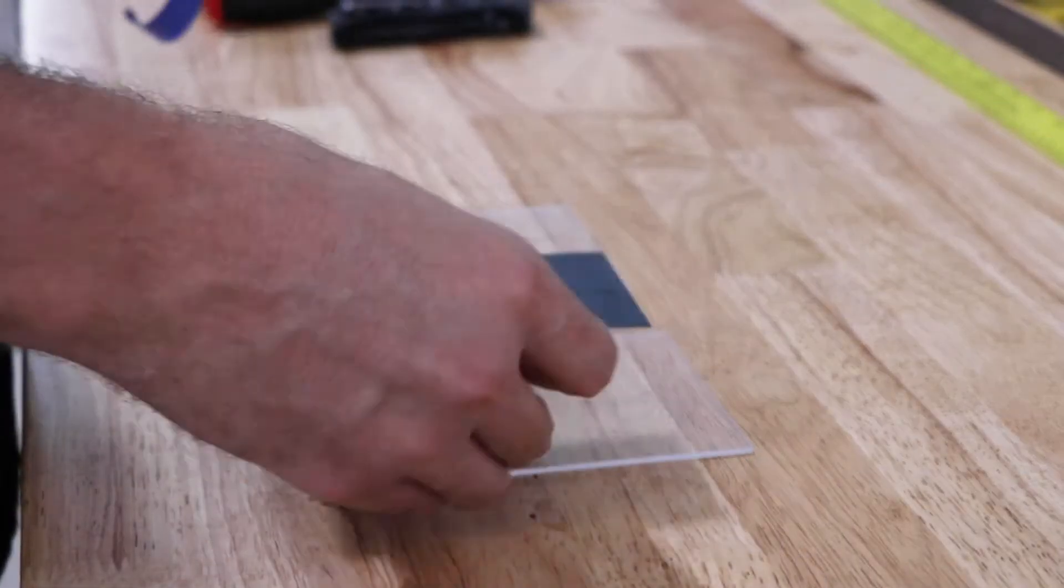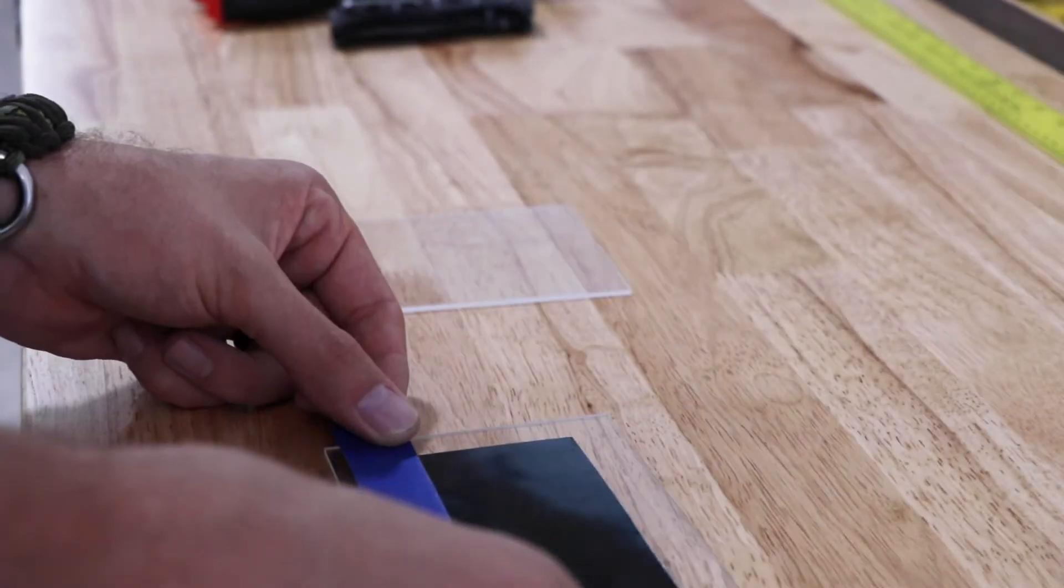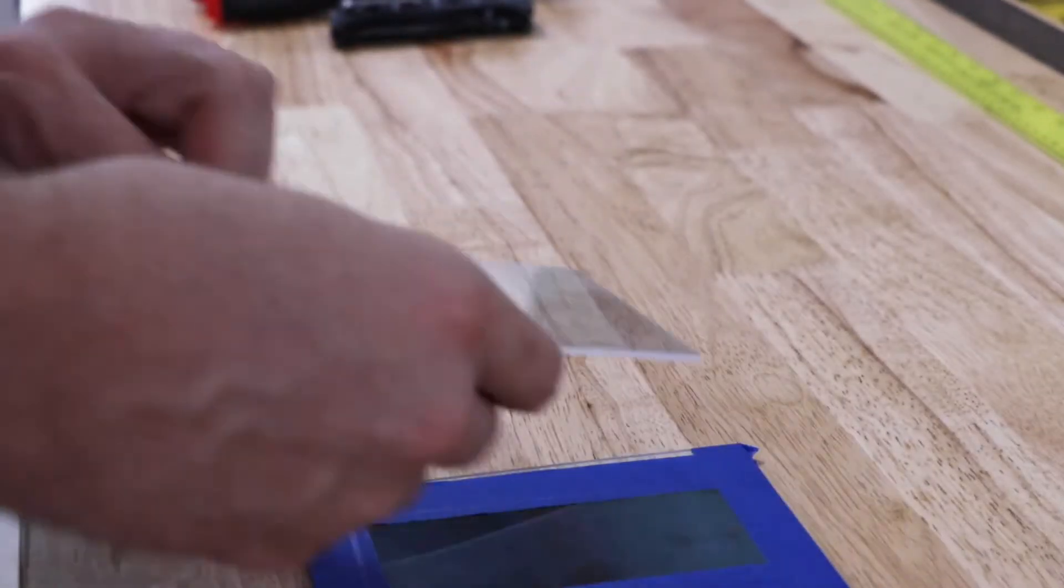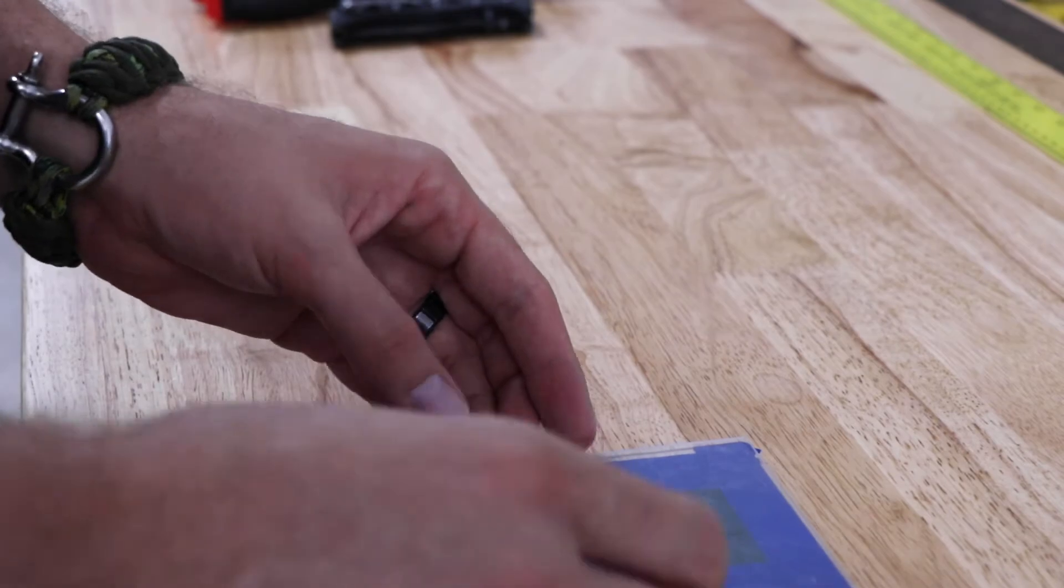What we're going to do is sandwich the material between two sacrificial materials. In this case we're using 80 thousandths polycarbonate with a 10 thousandths carbon steel shim stock in between.